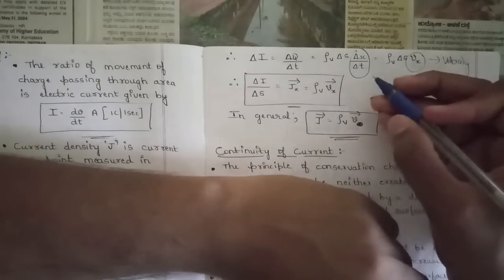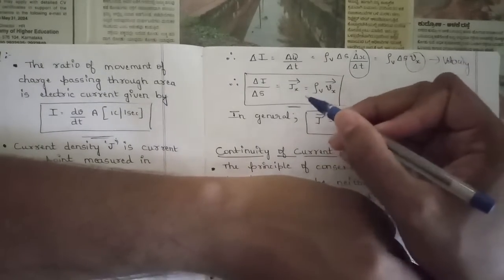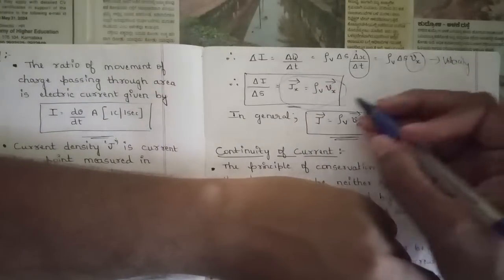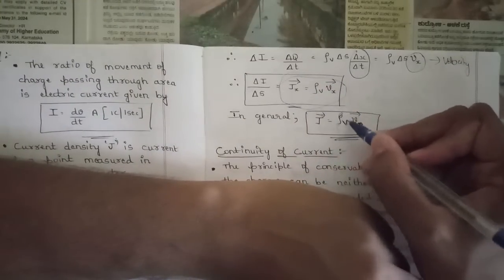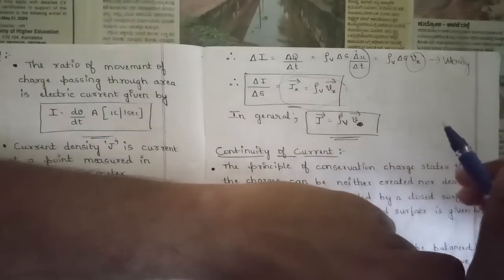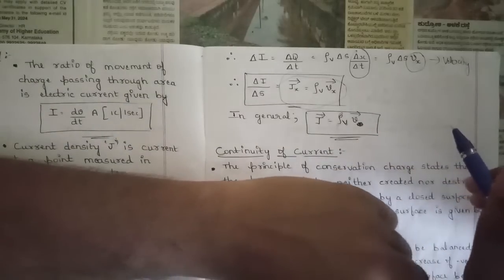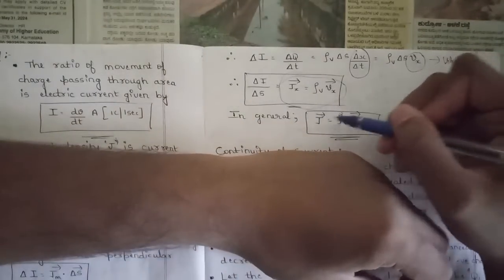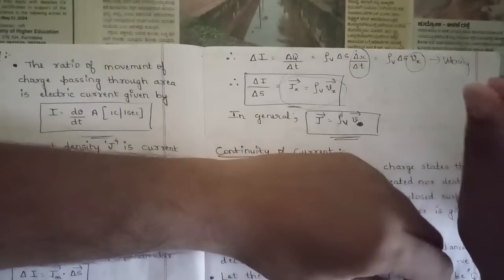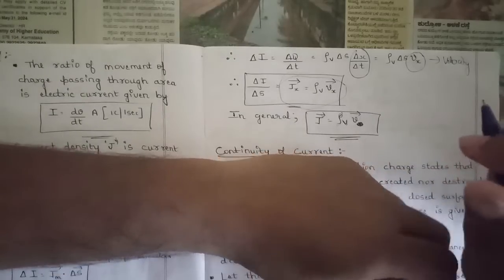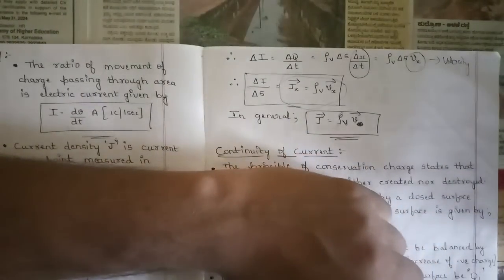In general, since this path is in the X direction, we can say J = rho_V · V vector. This is the general relationship obtained for current density. You need to remember that J = rho_V · V vector. This was the complete derivation of the current density formula.